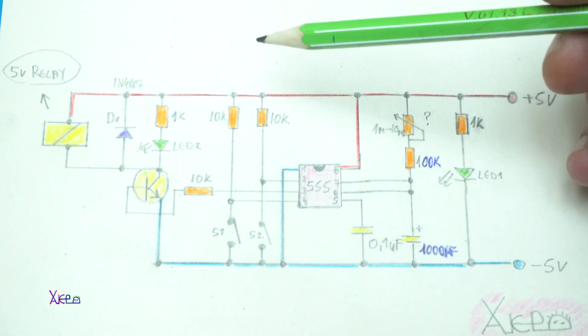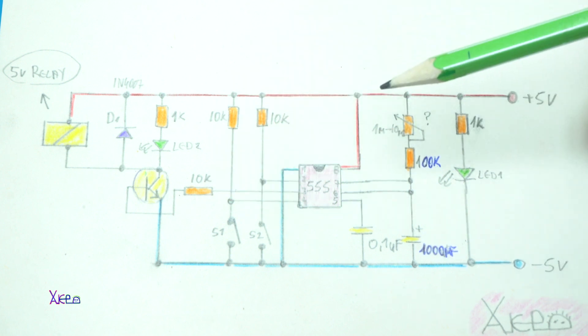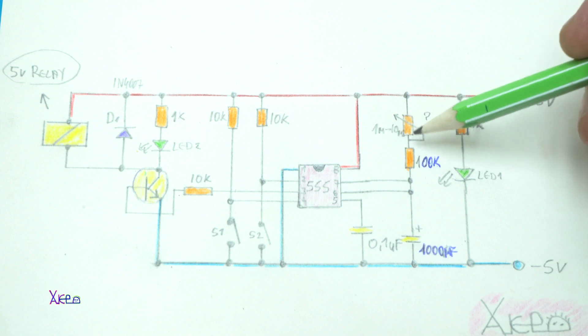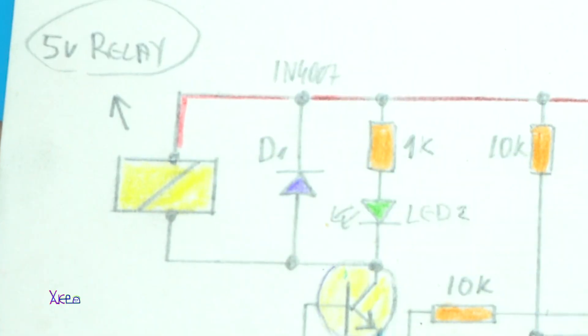Of course for making this you will need a 555 timer integrated circuit. You are going to need a couple of resistors like 10 kilo ohms, and 1 mega ohm for choosing the desired time when the timer will turn off.